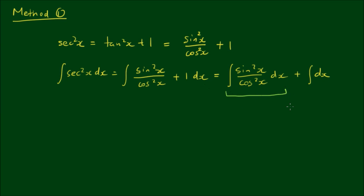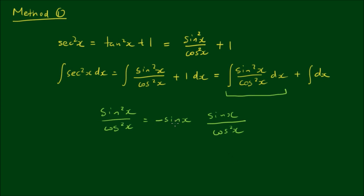For the first integral — sin²x over cos²x — let's rewrite it as sin x times sin x over cos²x, and make this a double negative: negative sin x times negative sin x over cos²x. The negatives still give a positive sin²x, and now we can consider this as the integration of two parts.